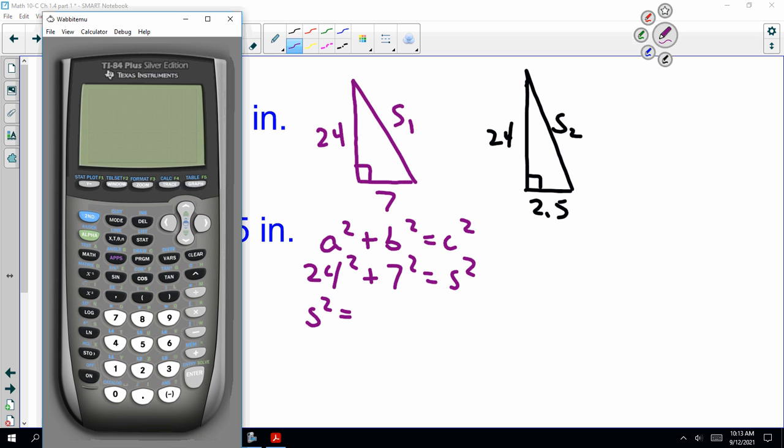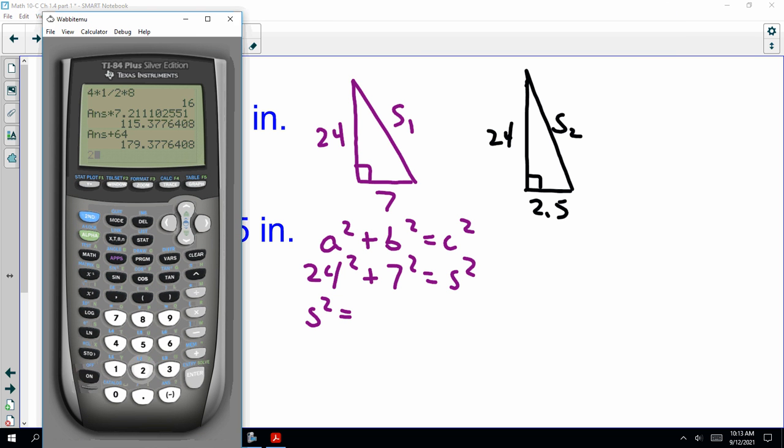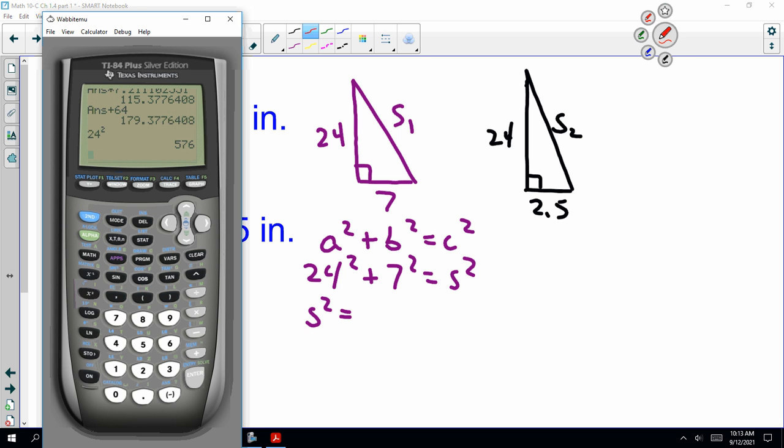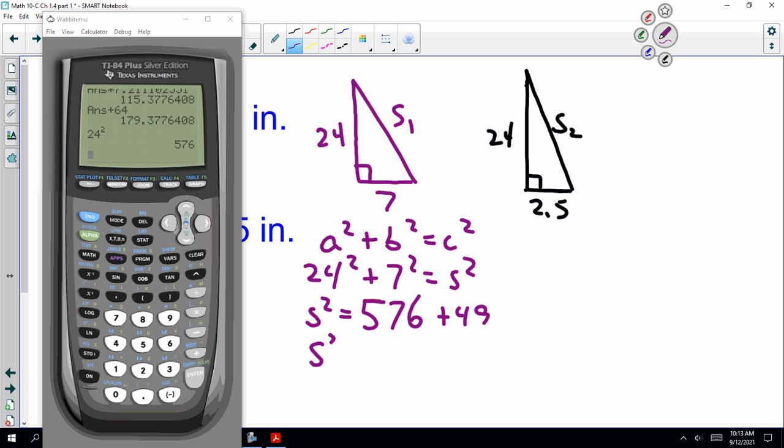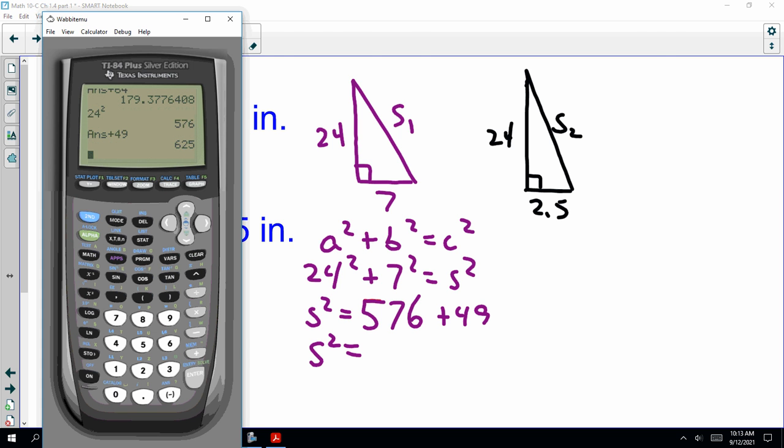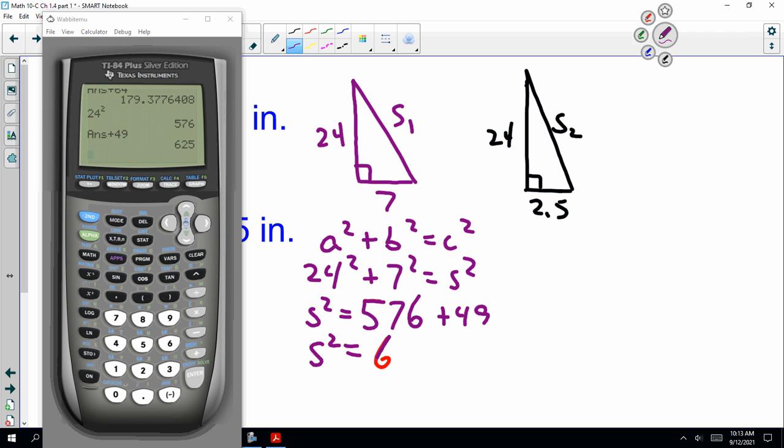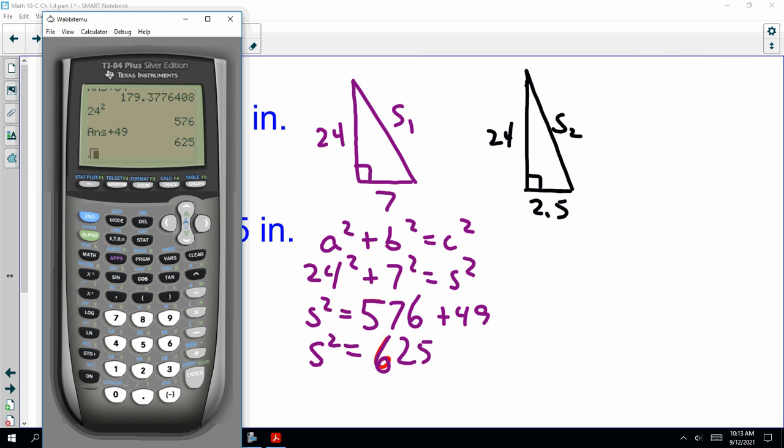a² + b² = c². 24² + 7² = s². s² = 576 + 49. s² = 625. And the square root of my answer is 25.